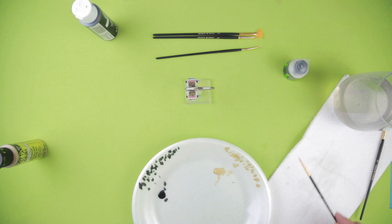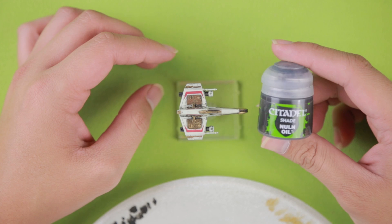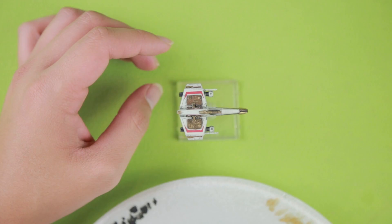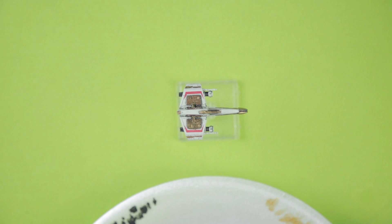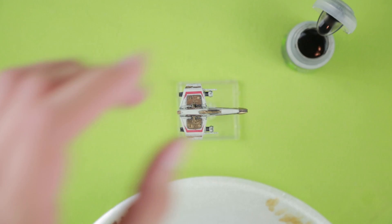So after the gold dries, I'm going to throw on the Citadel Nuln Oil Wash. I like to shake this up. It's extremely thin. It's mostly water. I have tried mixing my own washes but I didn't find that it turned out quite as good. The surface tension of my homemade wash just wasn't the same so it didn't cover as well as I would like.